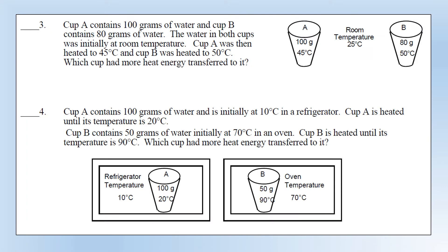Question three: cup A with 100 grams heated to 45 degrees C, and cup B with 80 grams heated to 50 degrees C. Which cup had more heat energy transferred to it? Pause the video and have a go. Looking at the first one: mass times temperature change, then mass times temperature change, gives us 2C in both cases - they're both water - so they are equal to each other.